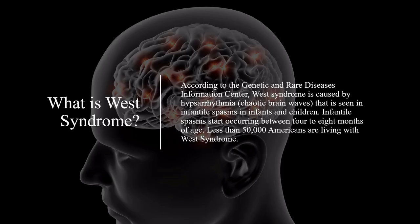According to the Genetic and Rare Diseases Information Center, West Syndrome is caused by hypsarrhythmia, or chaotic brain waves, that is seen in infantile spasms in infants and children. Infantile spasms start occurring between 4 to 8 months of age. Less than 50,000 Americans are living with West Syndrome.